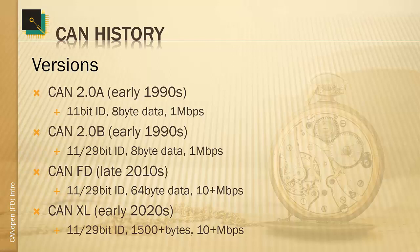Further down the line there is CAN XL — Extra Long — which is currently under specification. The main change from CANFD to CAN XL is that the data field is even longer. However, a bit will be used that allows CANFD controllers to ignore the contents, so CANFD controllers will not destroy CAN XL messages — they will simply ignore them if they can't deal with them.